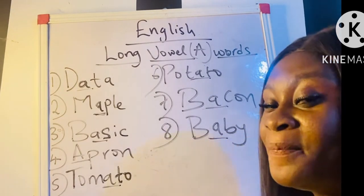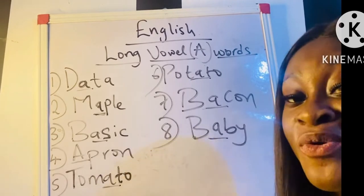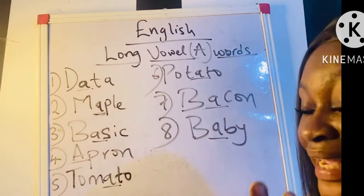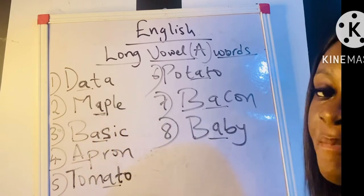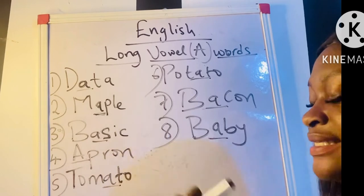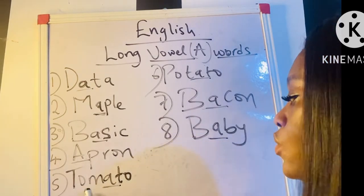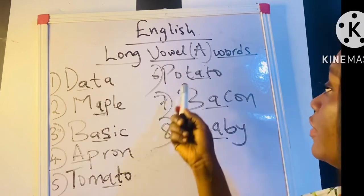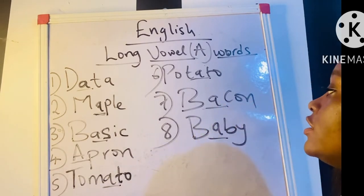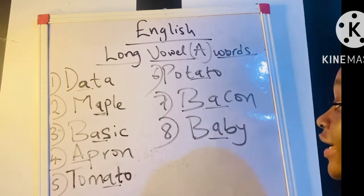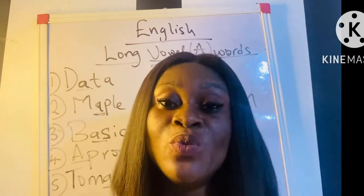If you are learning how to spell, you should recite and repeat after me, and even learn on your own. Remember, I asked you to get your writing materials so that you can write along. Data: D-A-T-A. Maple: M-A-P-L-E. Basic: B-A-S-I-C. Apron: A-P-R-O-N. Tomato: T-O-M-A-T-O. Potato: P-O-T-A-T-O. Bacon: B-A-C-O-N. Baby: B-A-B-Y.